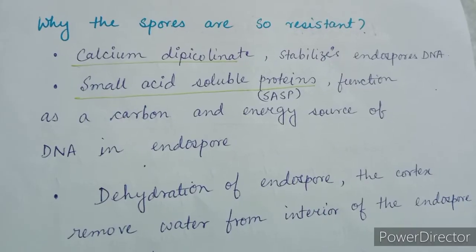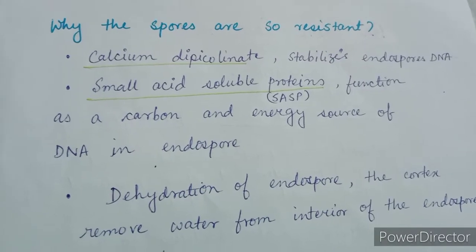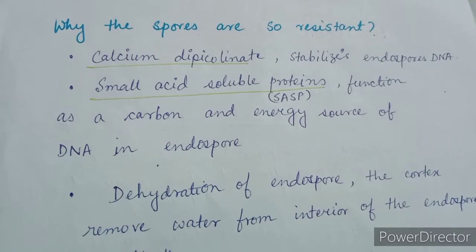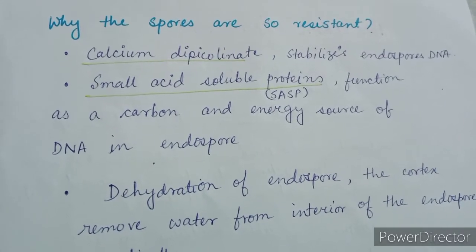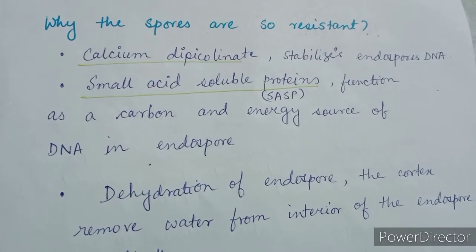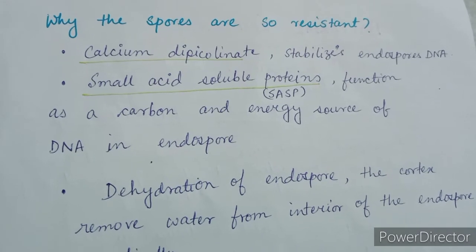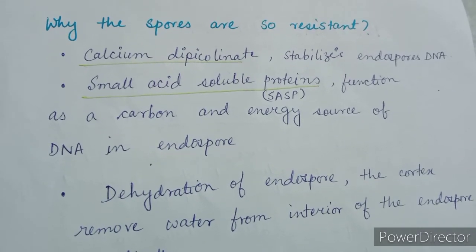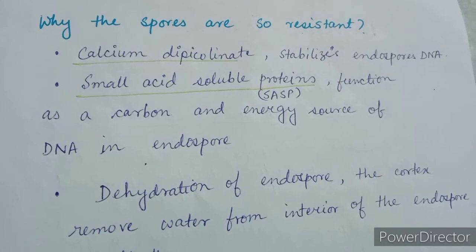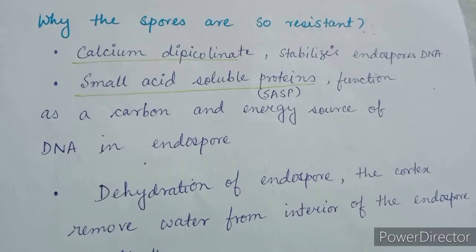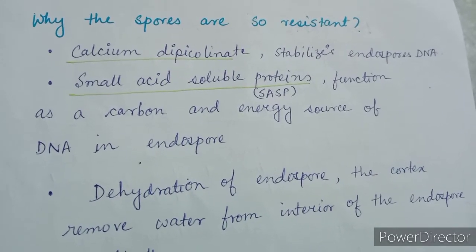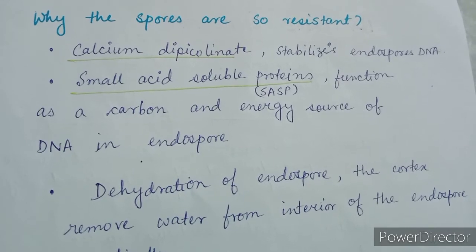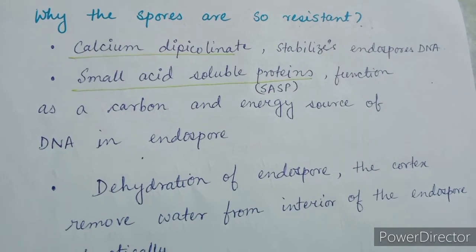Why are endospores so resistant? Endospores are resistant because of the presence of calcium dipicolinate. It stabilizes the endospore's DNA and small acid-soluble proteins, which function as a carbon and nitrogen source for DNA in the endospore. These small acid-soluble proteins are known as SASP.